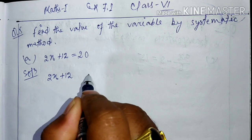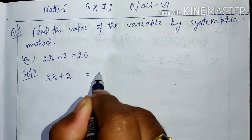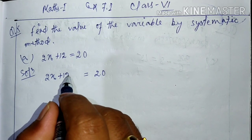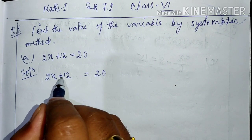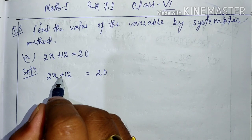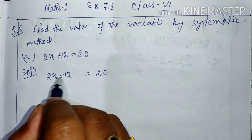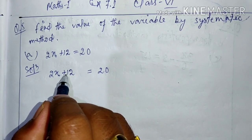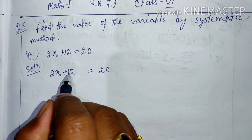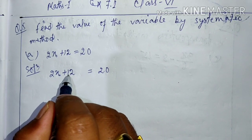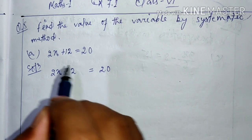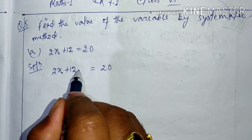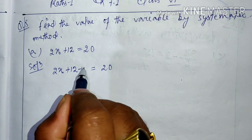The equation has plus 12 on one side and 20 on the other side. In the systematic method, we have to find the value of x. So, as much as possible, we have to remove the numbers from the side with x. To remove plus 12, we will try to eliminate this plus 12.